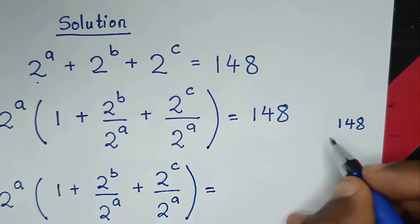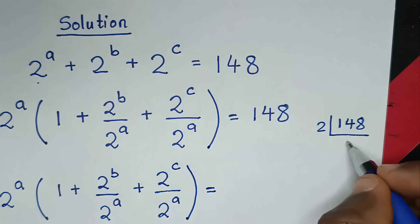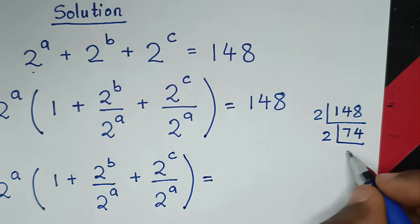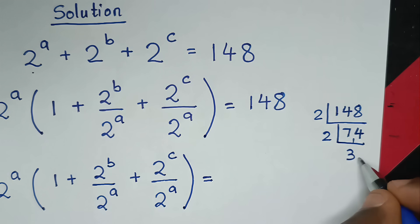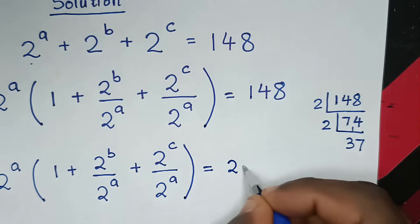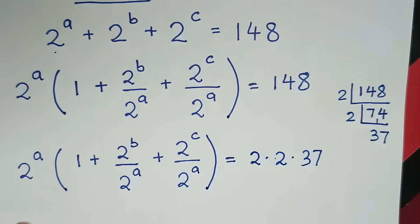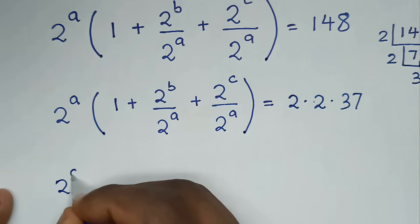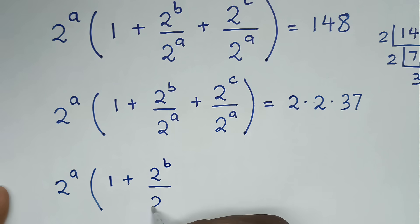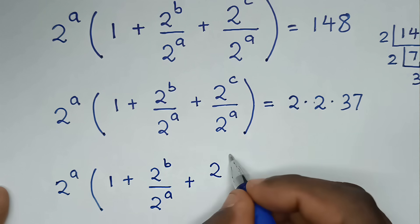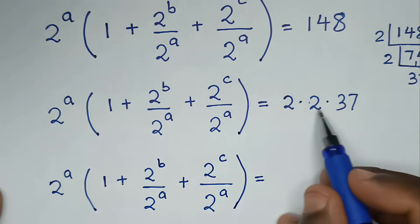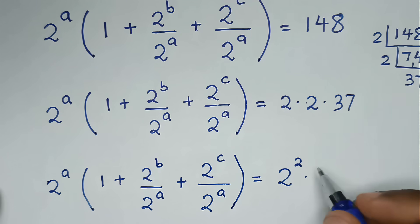148 is divisible by 2, giving 74; divide by 2 gives 37. So 148 equals 2 times 2 times 37, which is 2 squared times 37. So here: 2 power of A times bracket equals 2 squared times 37.